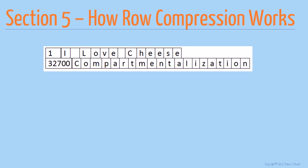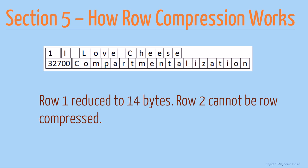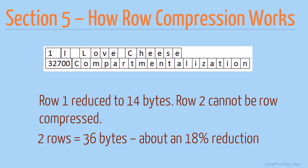So these two rows require 44 bytes to store. Now let's turn on row compression and see what happens. In the first record, SQL Server realizes that the value 1 stored in the small int field only needs 1 byte for storage, not 2, so it reduces that field down to 1 byte. It also notes that the string ILOVECHEESE only requires 13 bytes to store, not the full 20, so it reduces that field as well. The second row cannot be compressed because the value of 32,700 requires the full 2 bytes of the small int field, and the word compartmentalization is 20 characters long, so it fills the entire char20 field. After row compression has been turned on, these two rows now require 36 bytes to store instead of 44 — that's about an 18% reduction in size.